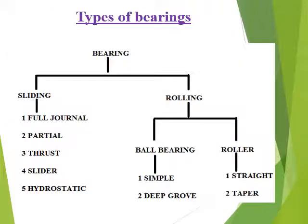Bearings have two major types: sliding and rolling. Under sliding we have full journal bearing, partial, thrust, slider, and hydrostatic. Under rolling we have ball bearings and roller bearings. Ball bearings are further divided into simple and deep groove types. Roller type bearings include straight and taper kinds.